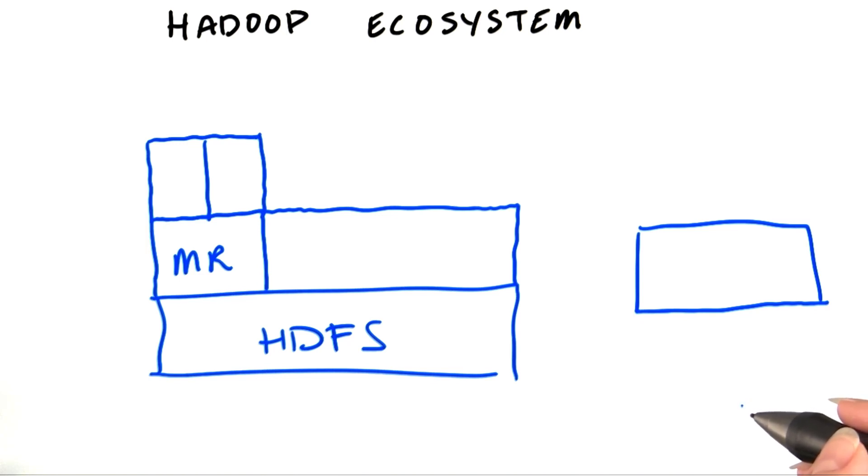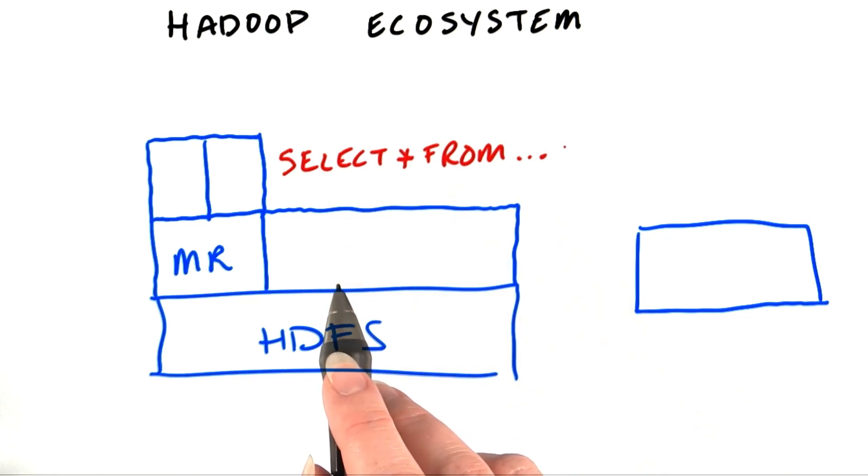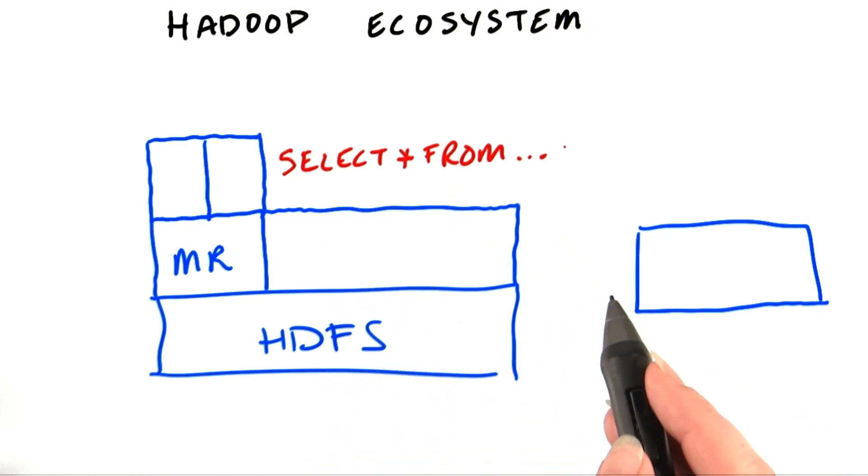For example, as you'll see in the next lesson, writing MapReduce code isn't completely simple. You need to know a programming language such as Java, Python, Ruby, or Perl, but there are lots of folks out there who aren't programmers but can write SQL queries to access data in a traditional relational database system like SQL Server. And of course, lots of business intelligence tools want a way to hook into Hadoop. For that reason, other open source projects have been created to make it easier for people to query their data without knowing how to code.